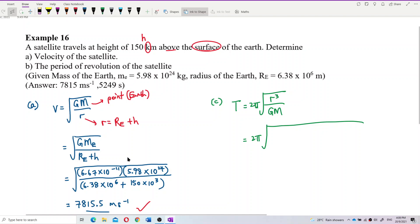So what's the radius of Earth again? 6.38 exponent 6, plus the altitude is 150 kilometer, 150 kilo is exponent 3.